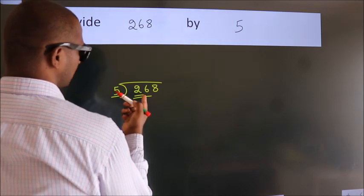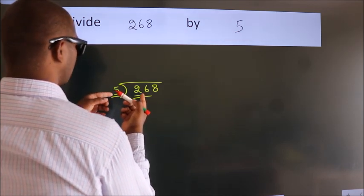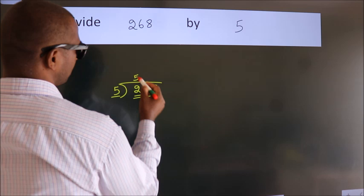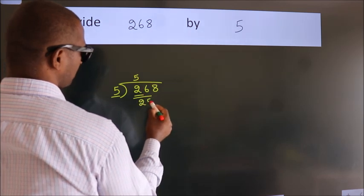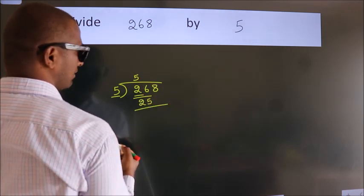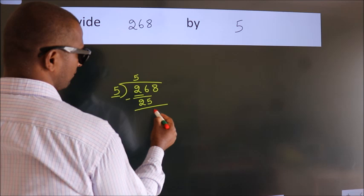A number close to 26 in the 5 table is 5 fives, 25. Now we should subtract. We get 1.